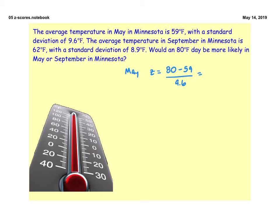And that gives us, let's see, 2.1875. So I'm going to go ahead and just stick to that 2 decimal place for a z-score. And then we have for September, we have z equal to 80 minus 62 degrees divided by 8.9. And that gives us 2.02.